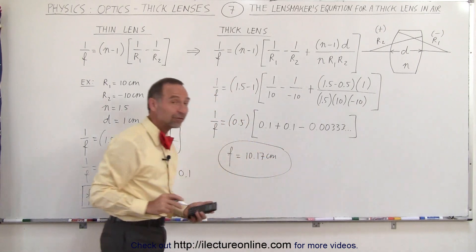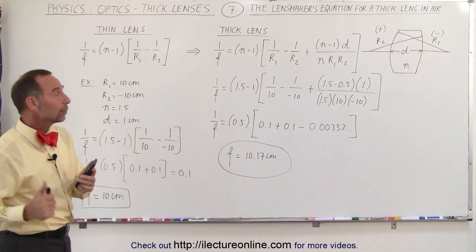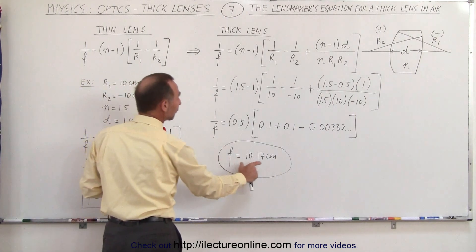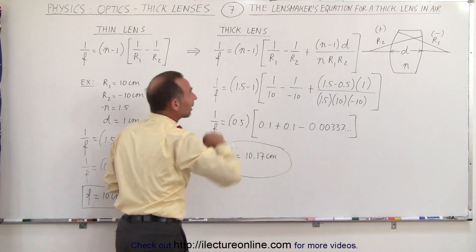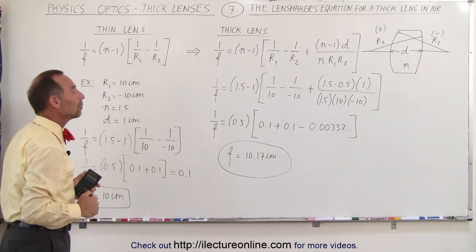So you can see it's not a big difference, but nevertheless it's not insignificant. So if you're dealing with thick lenses and you want to find a focal length, you do indeed want to use the thick lens lensmakers equation rather than the thin lens lensmakers equation.